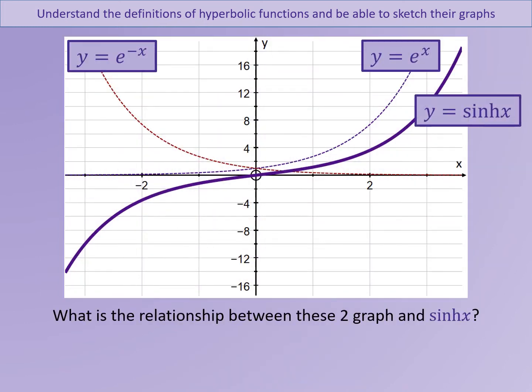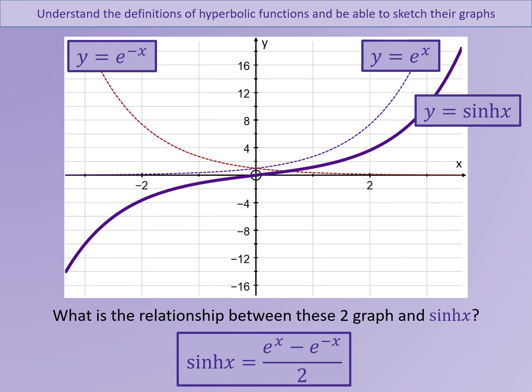Now we're going to consider how e to the x and e to the minus x relates to the sinh x graph. You may be able to spot the relationship between the two. Sinh x is e to the x minus e to the minus x, all over 2. For any point, you can see this by comparing the y coordinates of the two exponential functions with the y coordinates of the sinh graph.